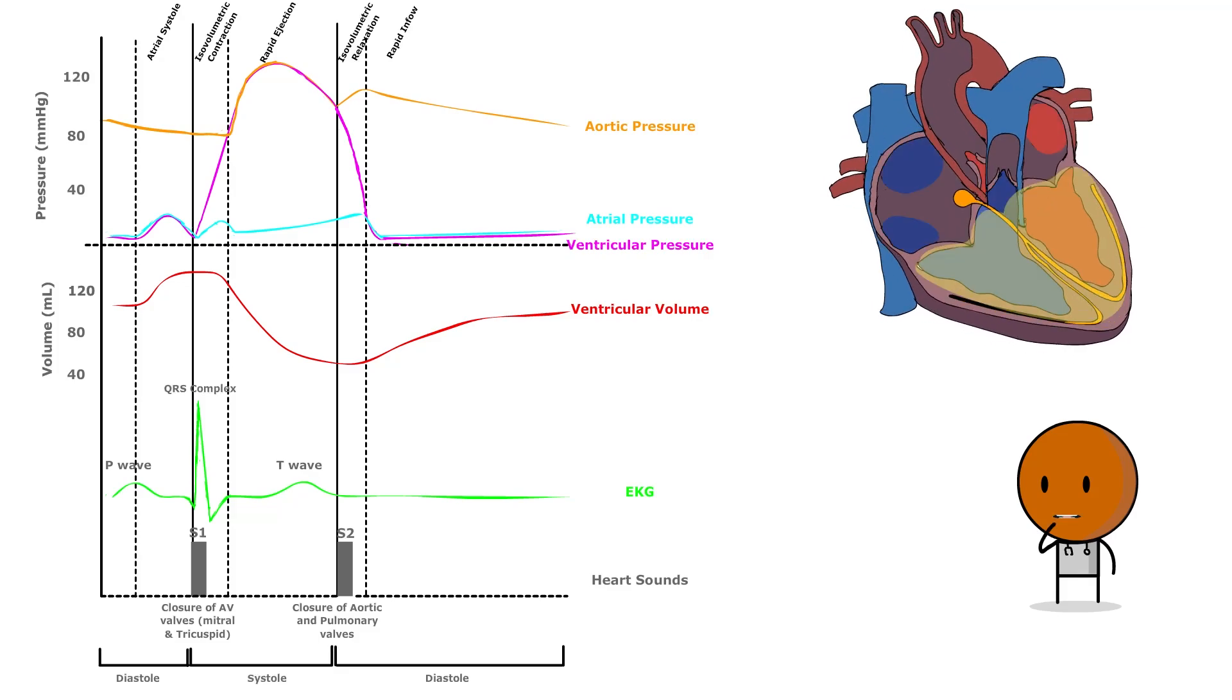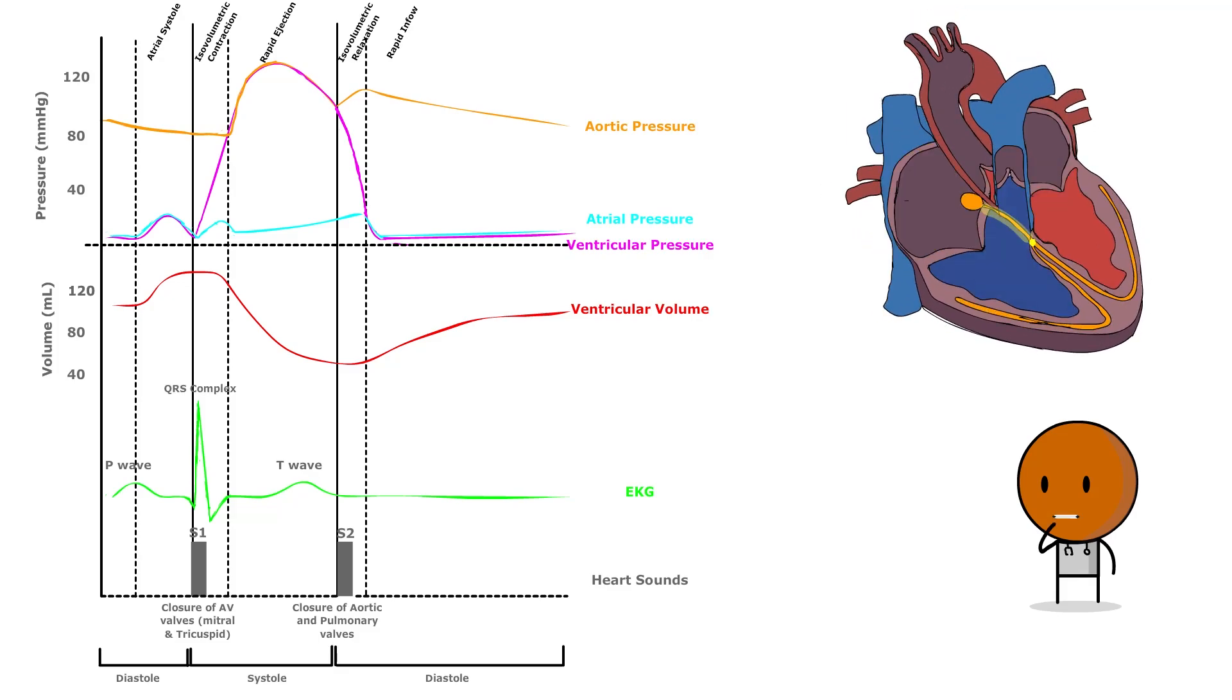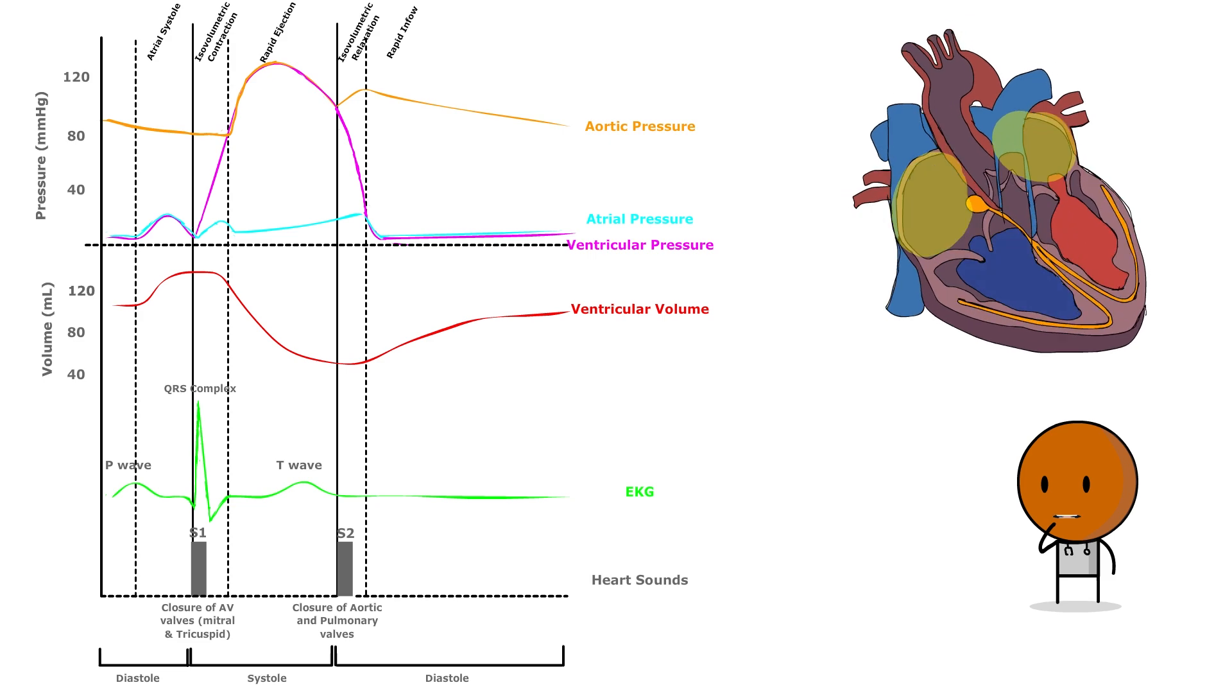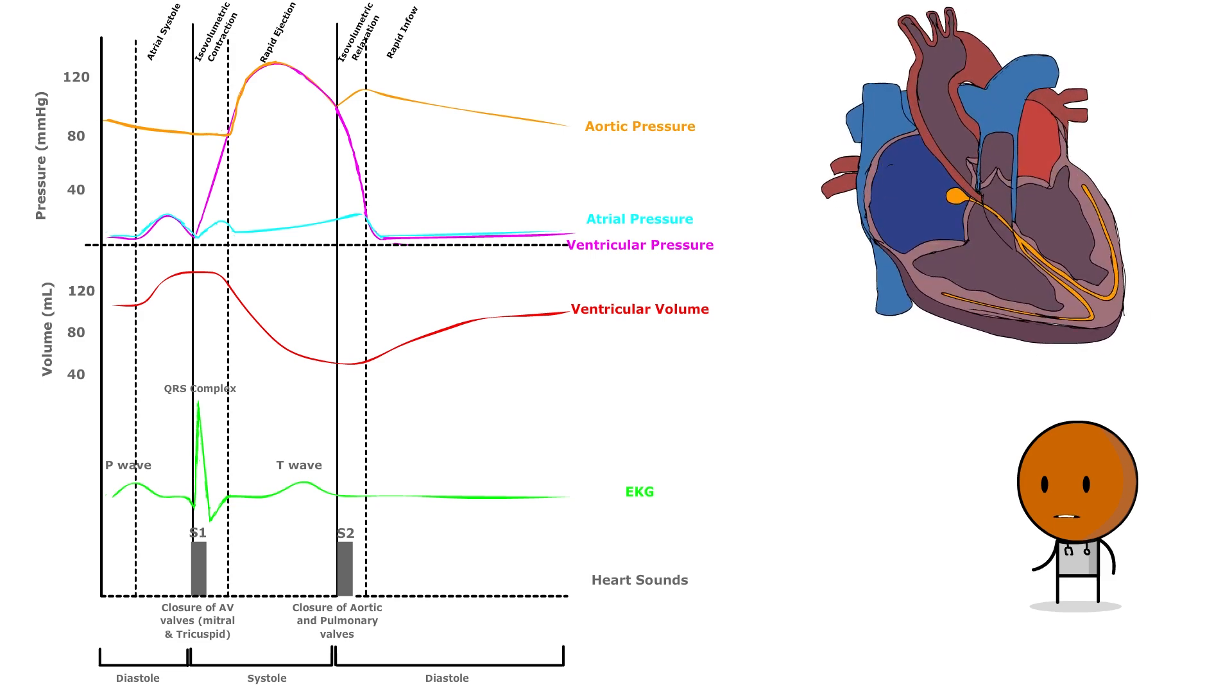Let's look at this cycle focusing on individual components to ensure you understand it completely. Let's focus on aortic pressure. So during the cardiac cycle, aortic pressure fluctuates as follows.